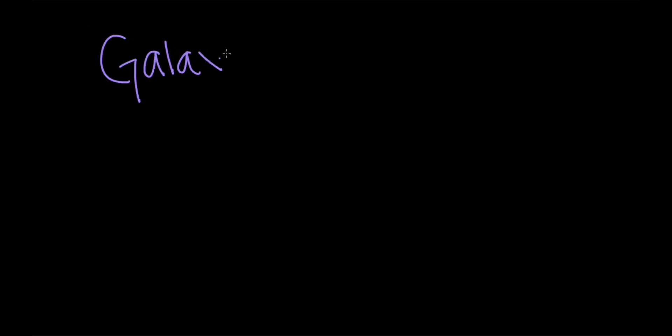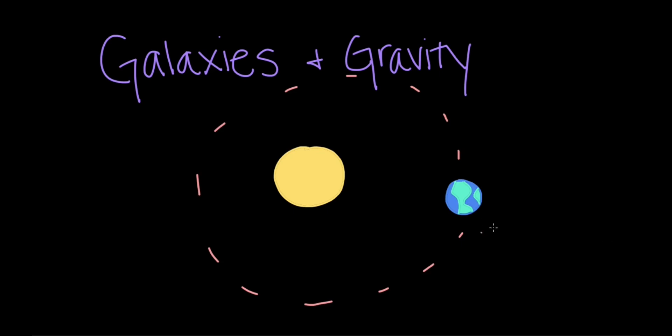Hello, everyone. Today we're going to be talking about galaxies and gravity. We know the Earth is a planet that is in orbit around the Sun. This is called the heliocentric model.